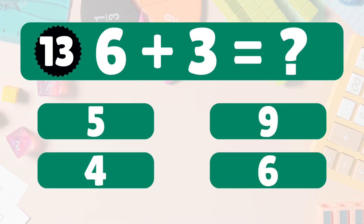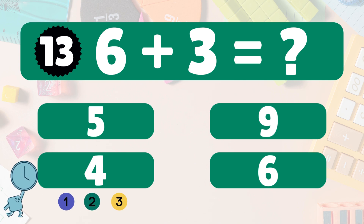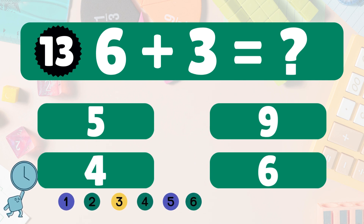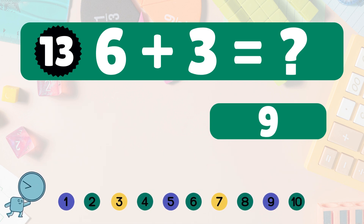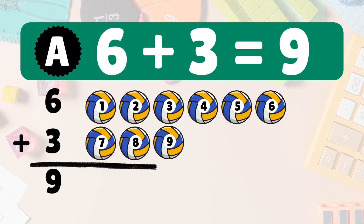6 plus 3 equals what? 6 plus 3 equals 9. Let's count. 1, 2, 3, 4, 5, 6, 7, 8, 9. 6 plus 3 equals 9. High 5.